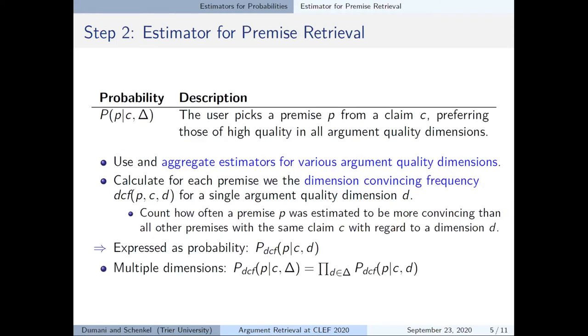And for the ranking of premises we do not trust text retrieval methods as a convincing premise does not need to have any textual overlap to the query. Thus we use classifiers which estimate different argument quality dimensions. The idea behind this is that some premises can be logically conclusive but may not evoke the reader's emotions and vice versa. And we aim to aggregate these qualities in order to rank the premises.